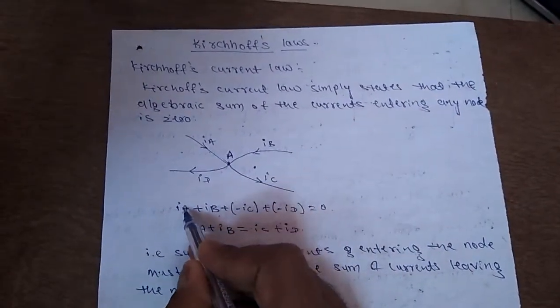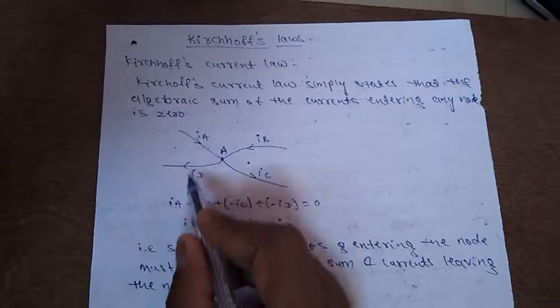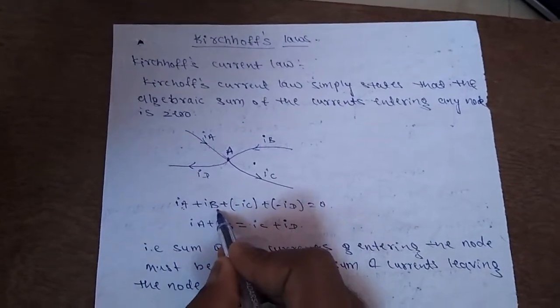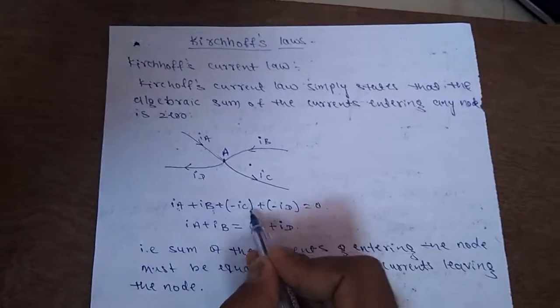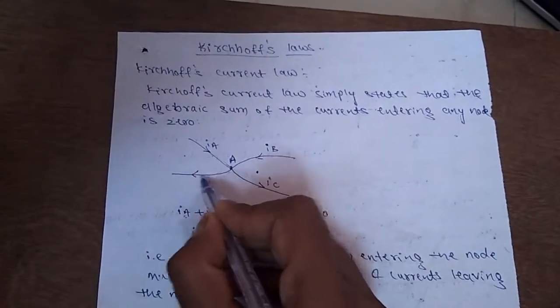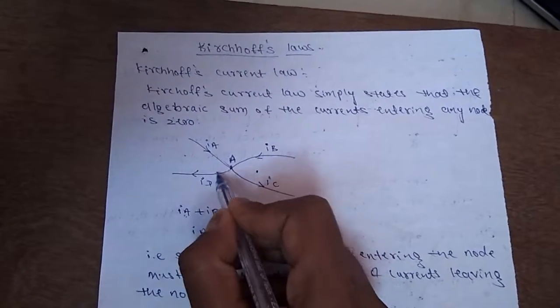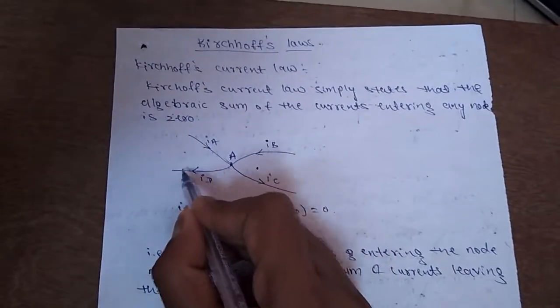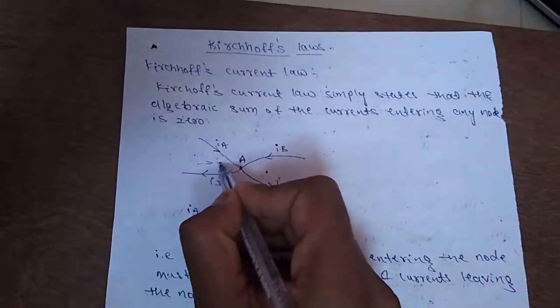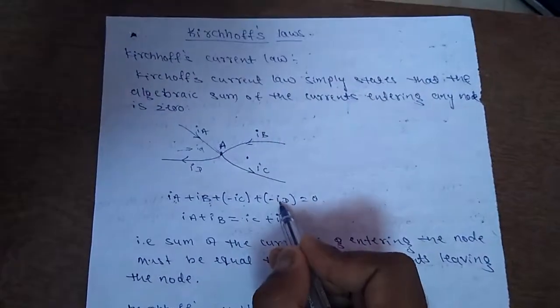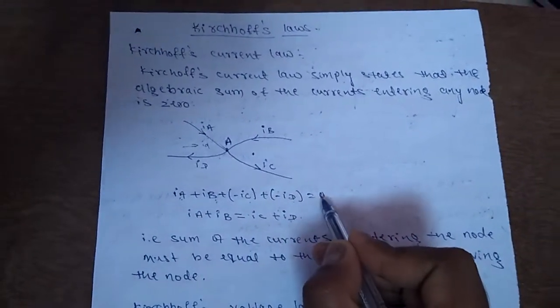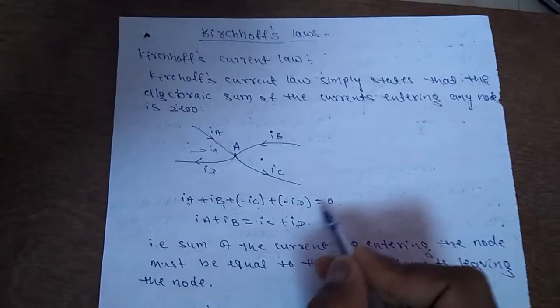In this, by Kirchhoff's law, what happens is, IA plus IB plus minus IC plus minus ID. This current ID is assumed to be going out from this node, and if it is away from this node, or moving away from this node, I can write it as minus ID entering into the node. Similarly, so I return that, and the algebraic sum of all these is going to be zero, according to Kirchhoff's law.